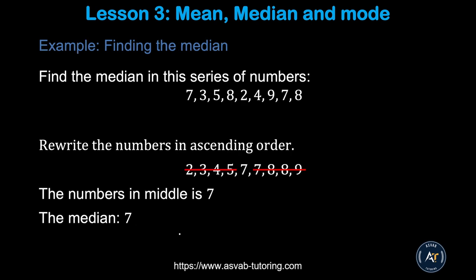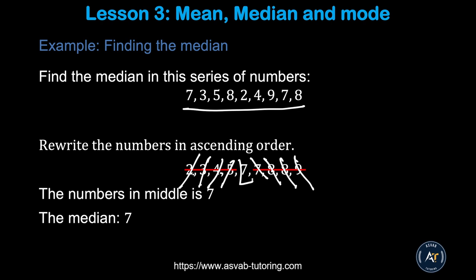The next topic is how to find the Median. Median is the mid value of a series of numbers. If you want to find the median, the first thing you have to do is write the numbers in ascending or descending order — greatest to smallest or smallest to greatest. Here we wrote smallest to greatest: 2, 3, 4, 5, 7, 7, 8, 8, 9. You cross out from the first with the last, working inward. The middle number is 7, so the median is 7.